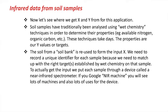Now we need to think about where we're going to get X and Y from for this particular application. Traditionally, soil samples are processed using wet chemistry techniques to determine properties of the soil such as available nitrogen and organic carbon, and those will result in the Y values we're interested in. We need a number of samples — say 50 to 100 — to have been processed using wet chemistry to produce the corresponding Y values.